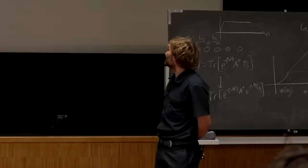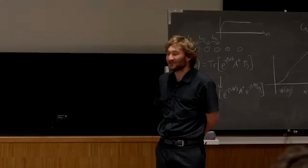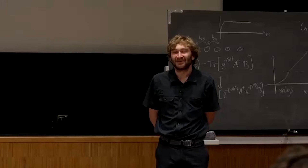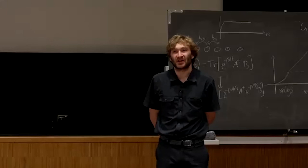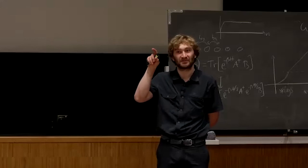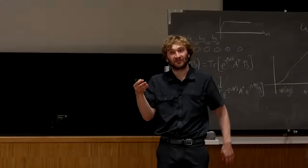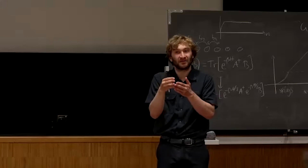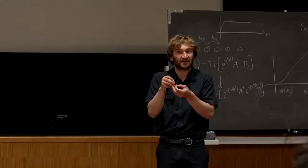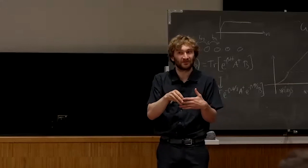From Carleman inequalities you get a decay estimate of e^{-|x|^{4/3}}, and it is conjectured that this can be improved to e^{-|x|^{1+epsilon}}, going from the exponent 4/3 down toward 1.